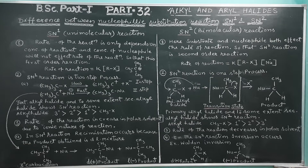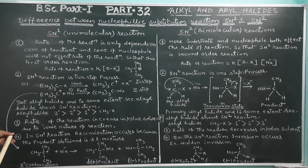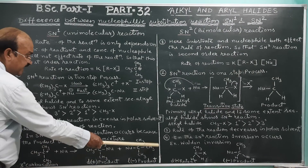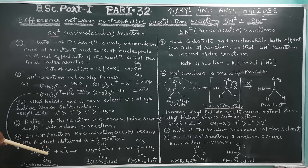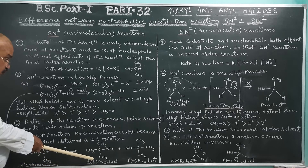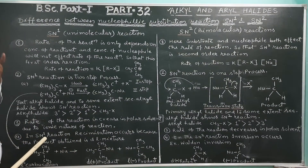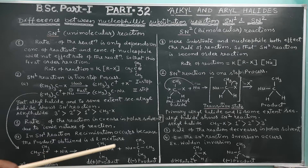The fourth point: in SN1, racemization occurs. When the product is formed, 50% is dextrorotatory and 50% is levorotatory — a racemic mixture. This happens because after the carbocation forms, the nucleophile is free to attack from any side of the tetrahedral carbon, giving either dextro or levo product equally.